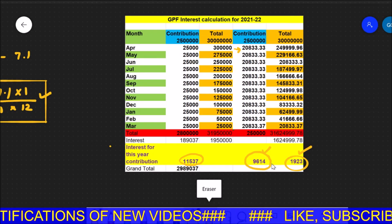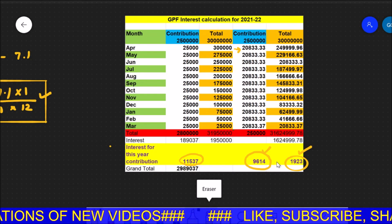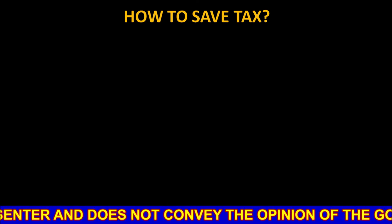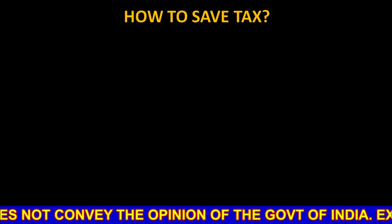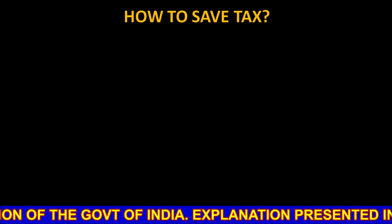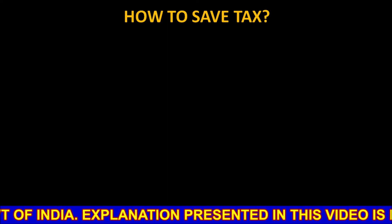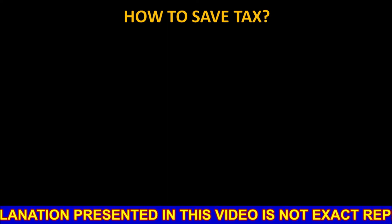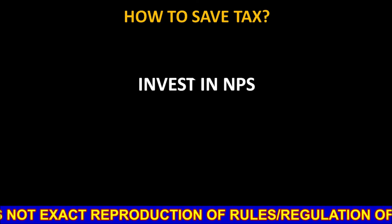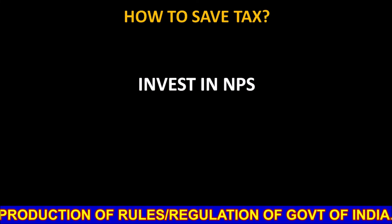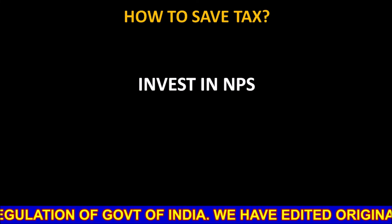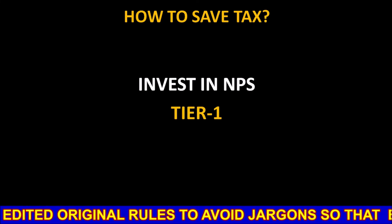It works on the same principle as the interest on your savings bank account. Now the question arises: how to save taxes? You have already seen how the interest is calculated and what the maximum ceiling is — how much tax you have to pay on the excess amount contributed to your GPF account. To save tax, I would suggest you start investing in NPS. Even if you are covered under GPF, you can invest in NPS as a citizen.